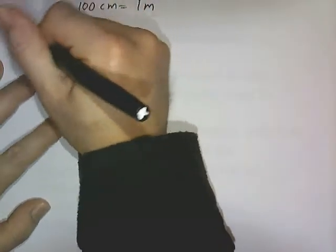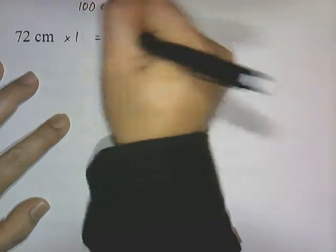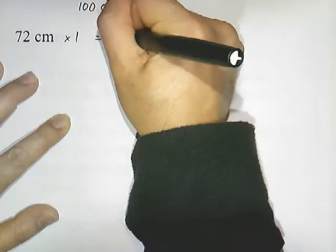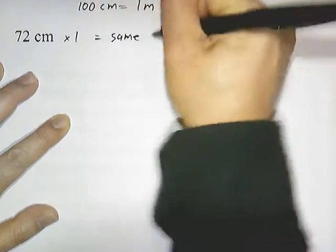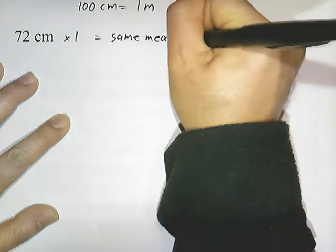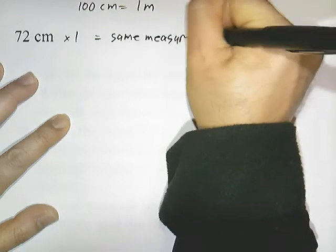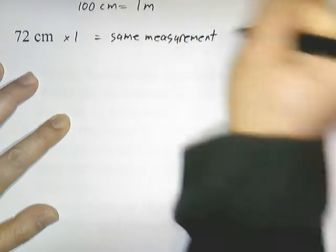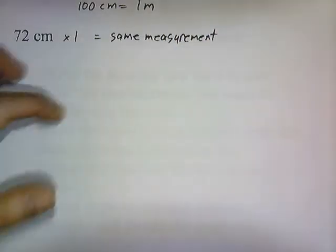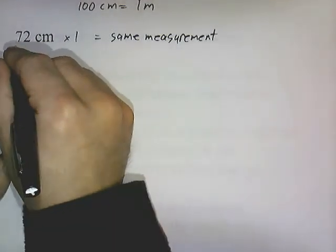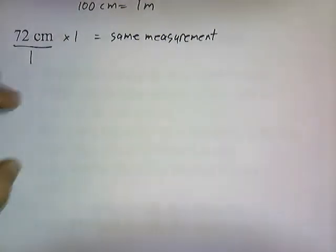We're just going to keep that fact in the back of our head. Here's how we'll start out: if I multiply a measurement times 1, you haven't changed it — it's the same measurement. And if I divide it by 1, it's still the same measurement.